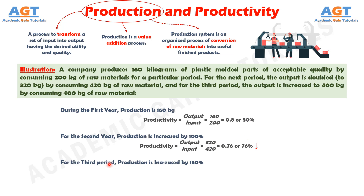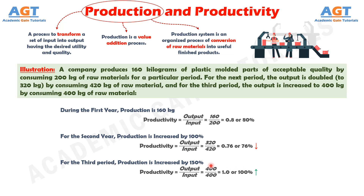For the third year period, production has increased from 160 kg to 400 kg, so production has increased by 150%. The productivity for the third year is obtained by dividing the output of 400 kg by the input of 400 kg, which gives a productivity of 1.0, or 100%. In this case, when production increased by 150%, productivity also increased from 80% to 100%.